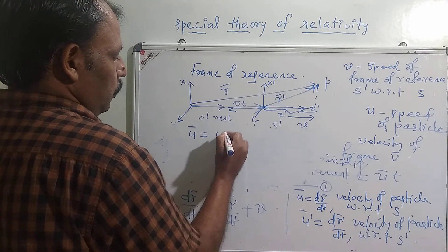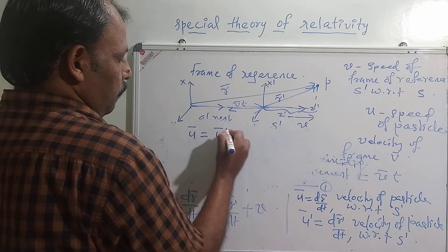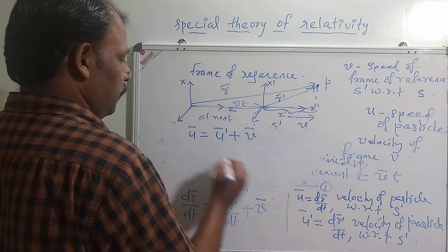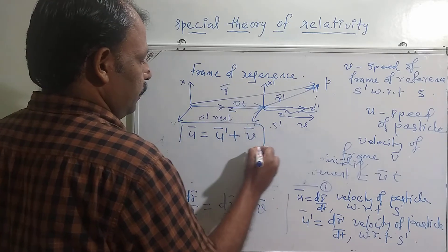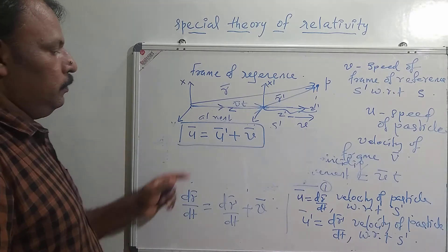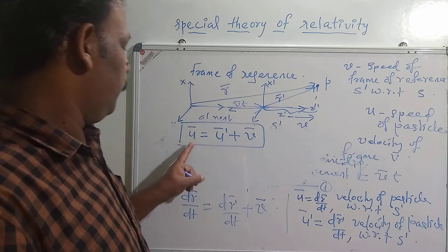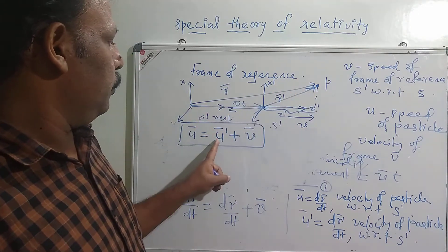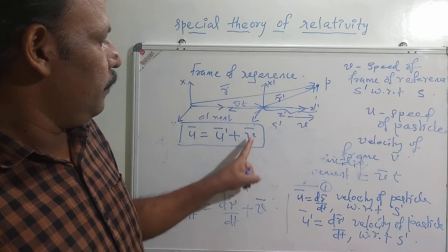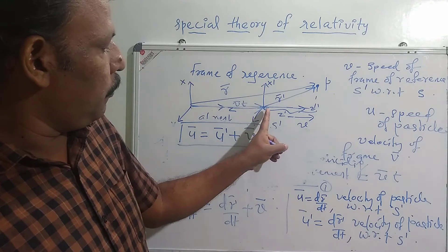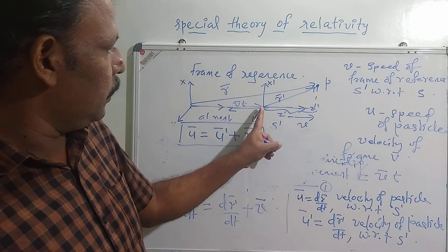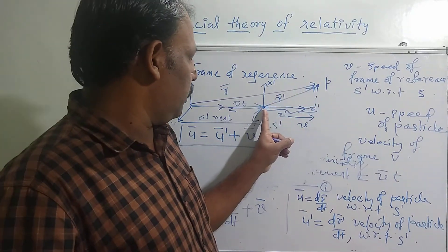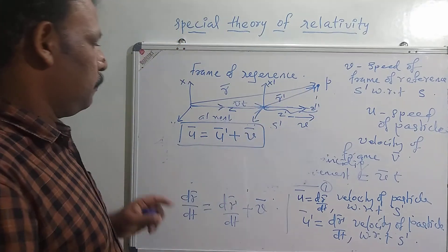So the relation connecting the velocities is U equal to U prime plus V. The velocity of the particle observed by S will be U prime plus V, where V is the velocity of the frame of reference and U prime is the velocity of the particle observed by frame S prime.